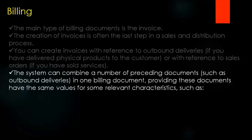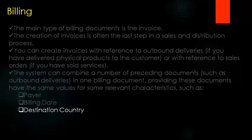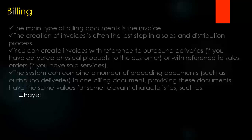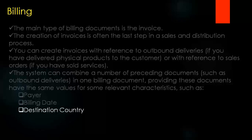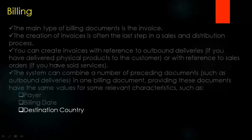The system can combine a number of preceding documents — such as multiple outbound deliveries — into one billing document, provided those documents have the same values for certain relevant characteristics: the payer, the billing date, and the destination country. So you can have two, three, or four delivery documents all combined into one billing document when these characteristics match.